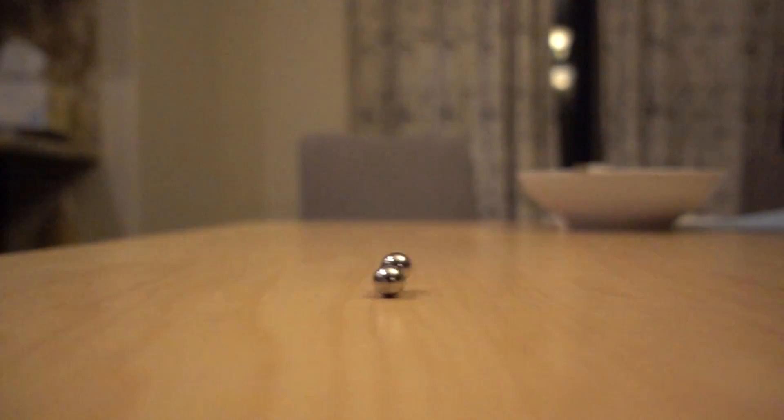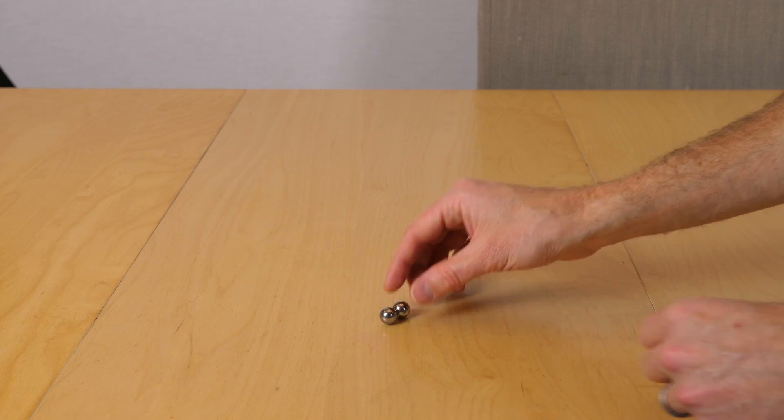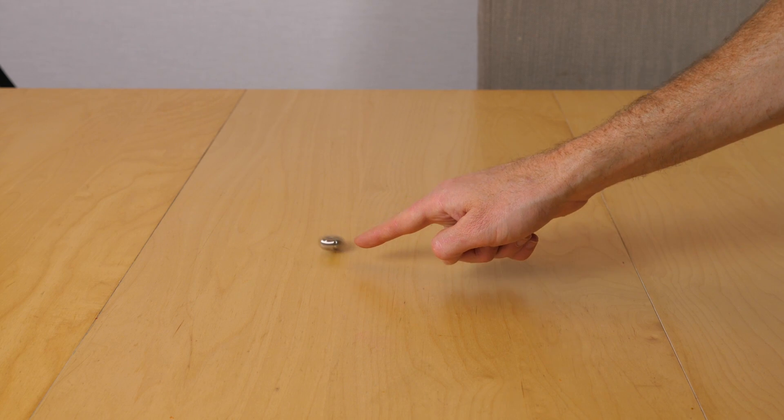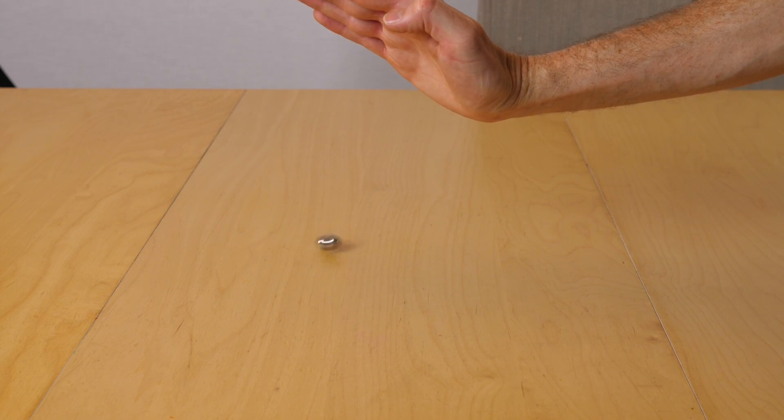So when you spun it, it lifted the center of mass up from the bottom. So it gained potential energy from you spinning it. So for some odd reason, when you spin two balls together, one of them goes up in the air and then it slowly starts to fall down.